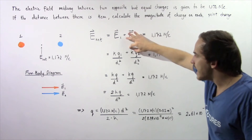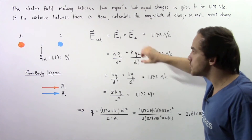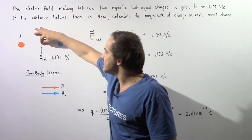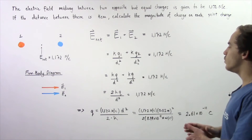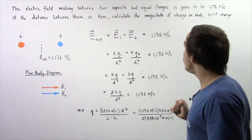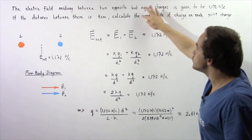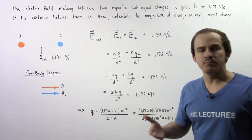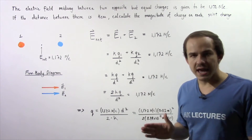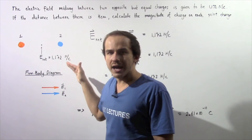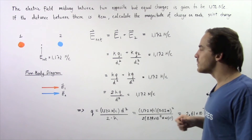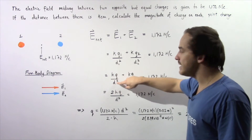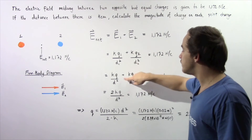Similarly, E2 equals K times Q2 divided by D2 squared, where D2 is the distance from point charge 2 to the midpoint, and this equals 1172 N/C. Since the charges have the same magnitude, we replace Q1 and Q2 with simply Q. Since the midpoint is equidistant, D1 equals D2, so we replace both with D. This gives us KQ/D² + KQ/D².